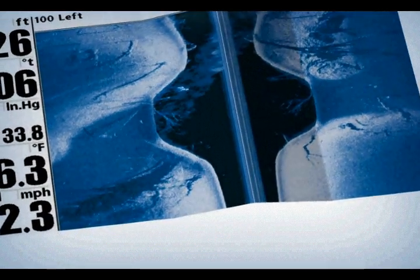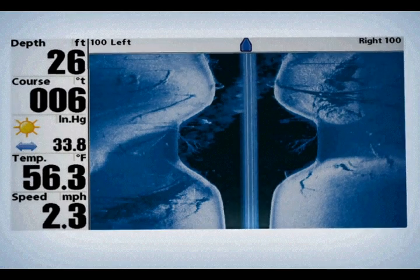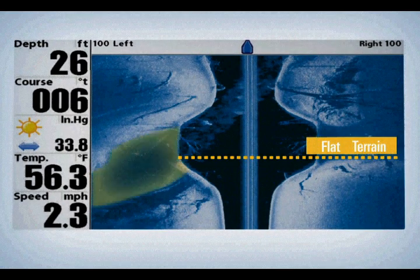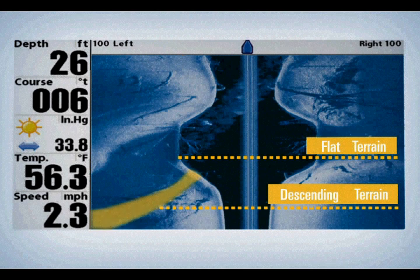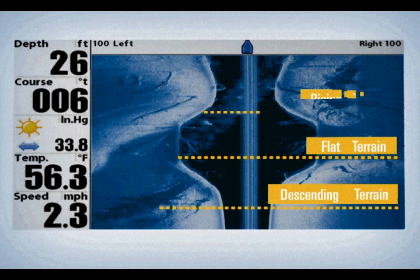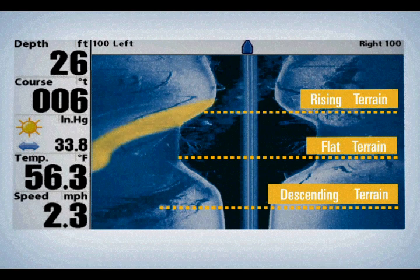Now let's take a closer look at what appears on the screen. Flat bottom terrain will appear as a neutral shade of blue. Descending terrain appears as a darker shade of blue, while terrain rising from the bottom will appear in a whiter shade of blue.